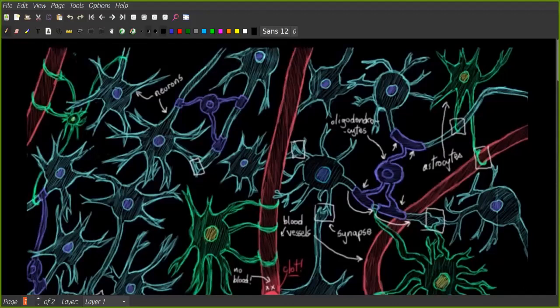I have the neurons which are blue, and we have the oligodendrocytes which are these purple things. They hold up all the neurons.